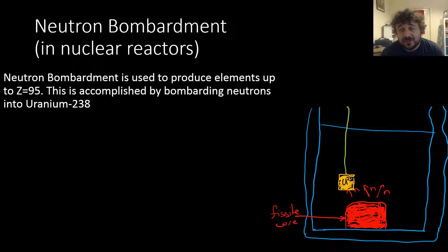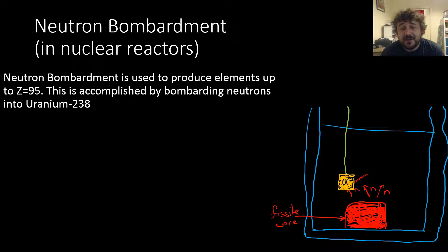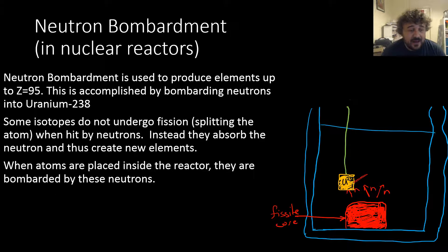We can use neutron bombardment to produce elements up to Z=95, and we start with uranium. We bombard that with neutrons, and that's why we can't get much higher than 95 this way. Uranium-238 is non-fissile, which means it doesn't undergo fission — it doesn't split spontaneously. So when we hit it with neutrons, it will absorb them, and this creates new elements. We'll have a look at a specific example in a minute.